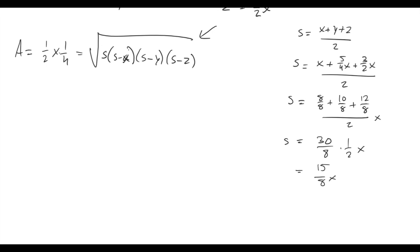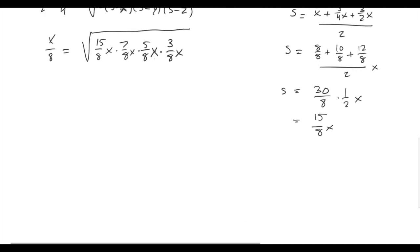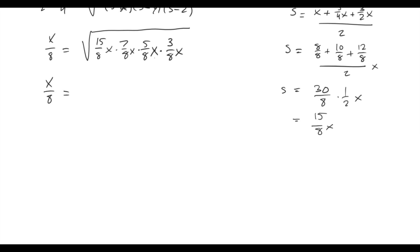So that's the semi-perimeter. Let's plug that into our equation. The left is x over eight. The right is square root of fifteen eighths x, and then fifteen eighths minus one is seven eighths x. Fifteen eighths minus five fourths—fifteen eighths minus ten eighths is five eighths, twelve eighths, so we're left with three eighths x.